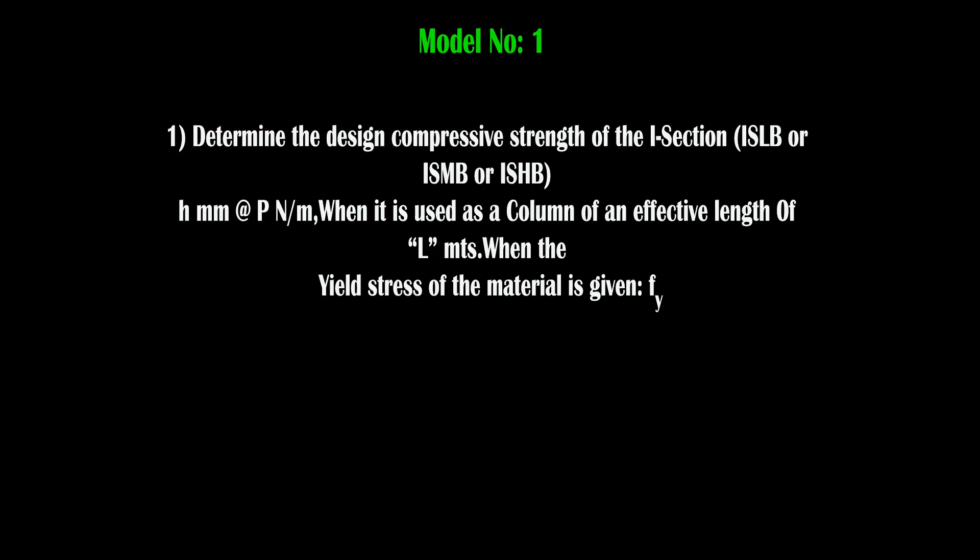Let us have a discussion on design of columns. In design of columns, the first problem is model number 1. The question pattern will be like this: determine the design compressive strength of an I section — ISLB (Indian Standard Light Beam), ISMB (Indian Standard Medium Beam), or ISHB (Indian Standard Heavy Beam) — of H mm at the rate P newton per meter, where H indicates the depth of the I section and P indicates the weight, when it is used as a column of an effective length of L meters.